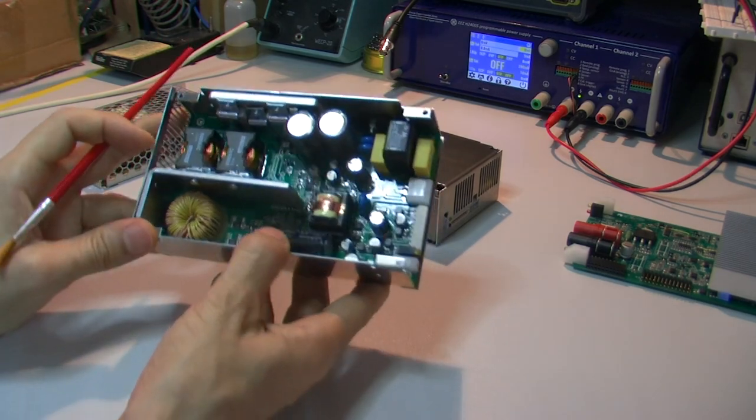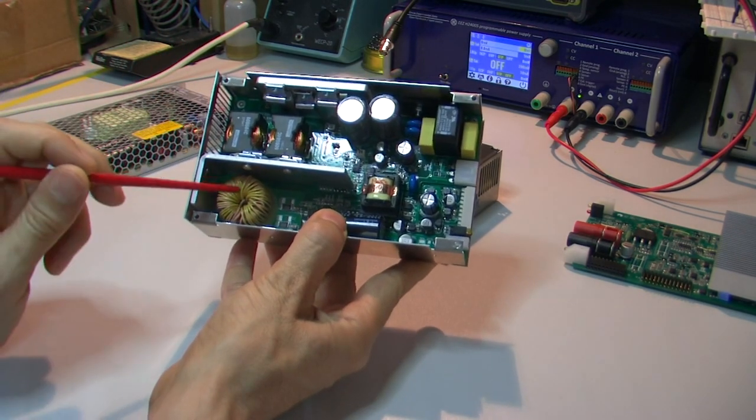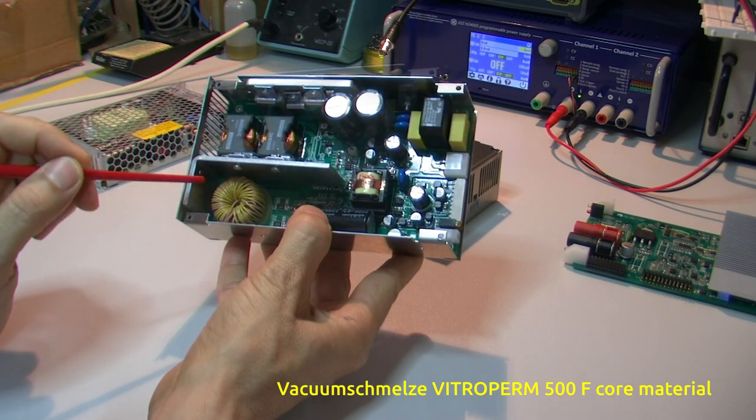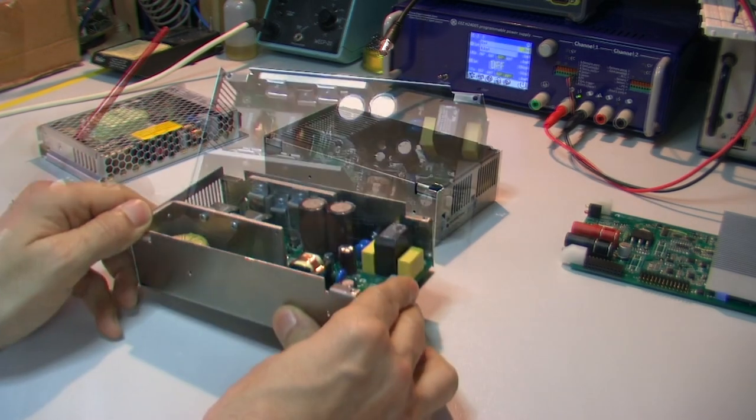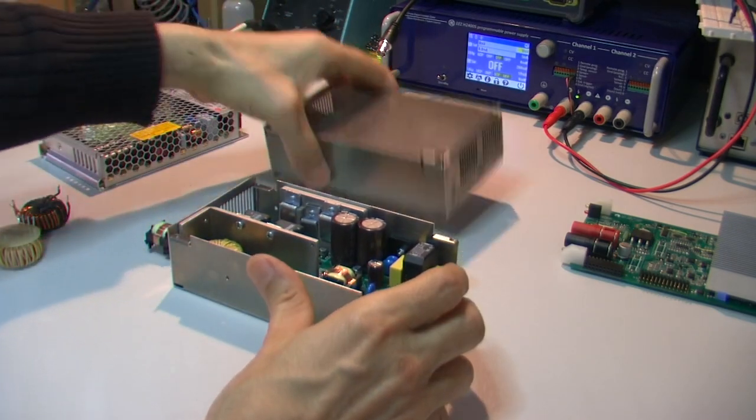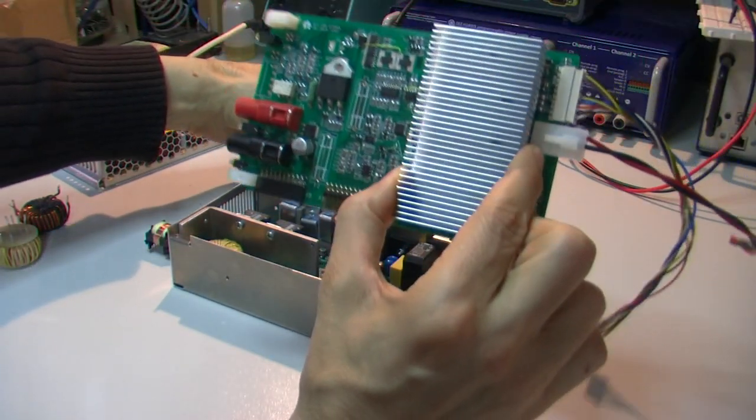Especially interesting component is this transformer. This transformer is wound on a high permeability core. This power pre-regulator is intended to use with a new post regulator.